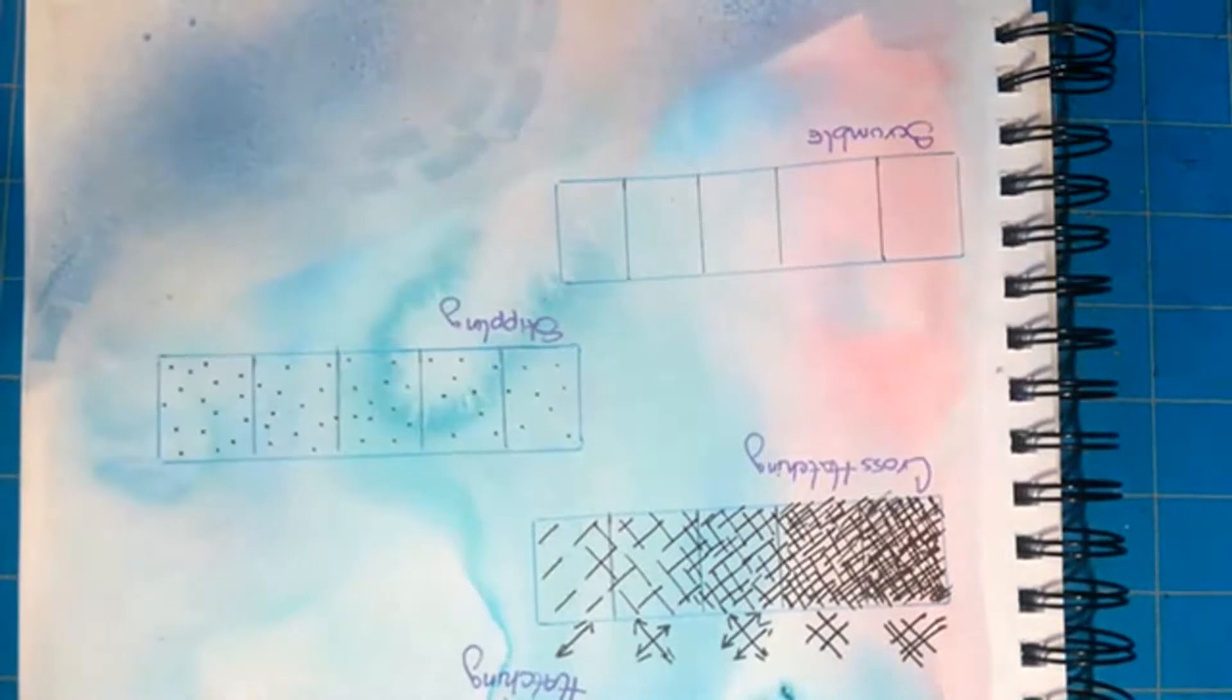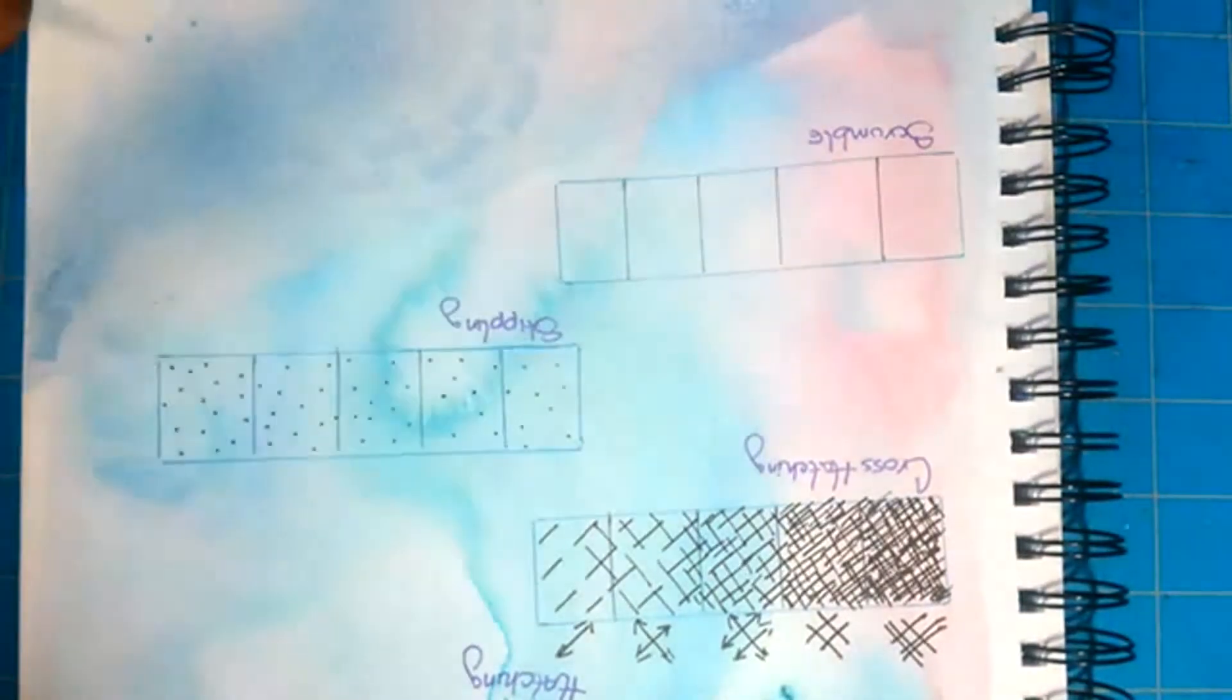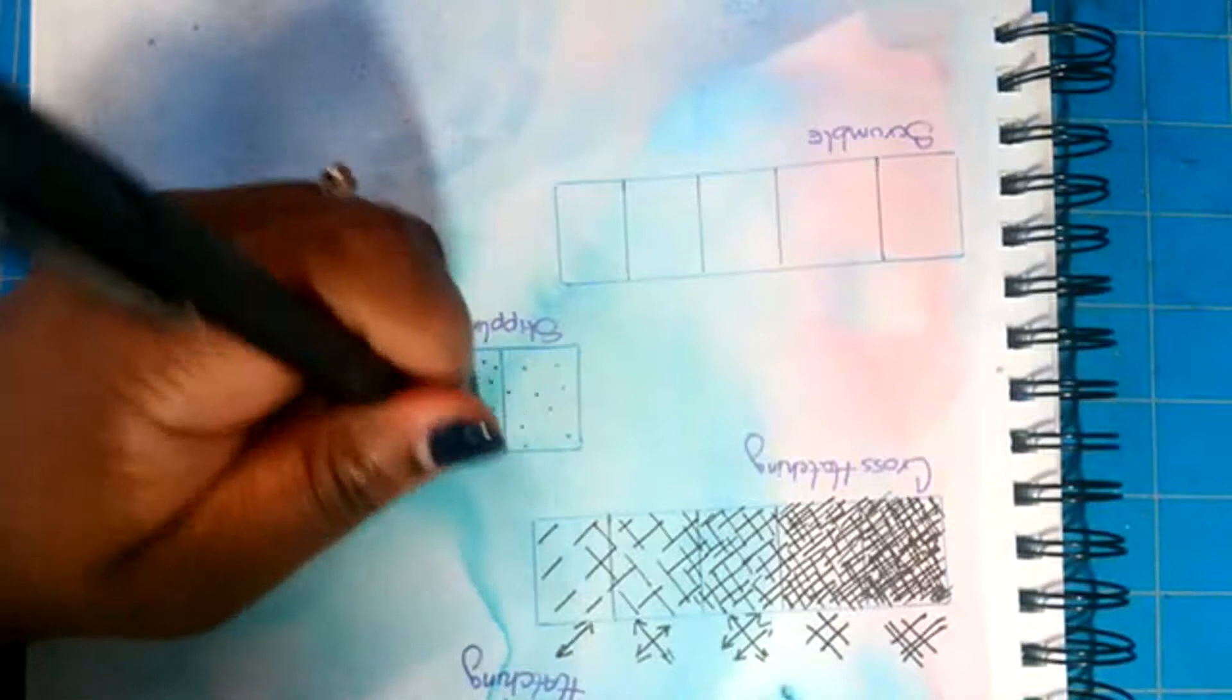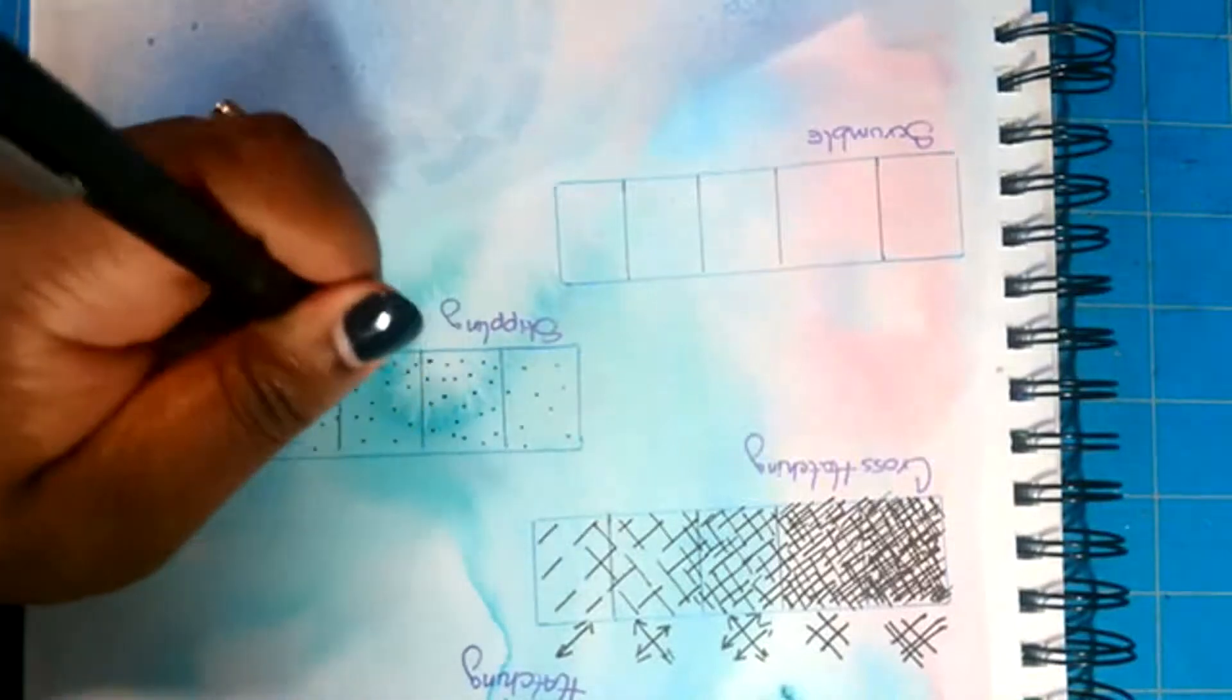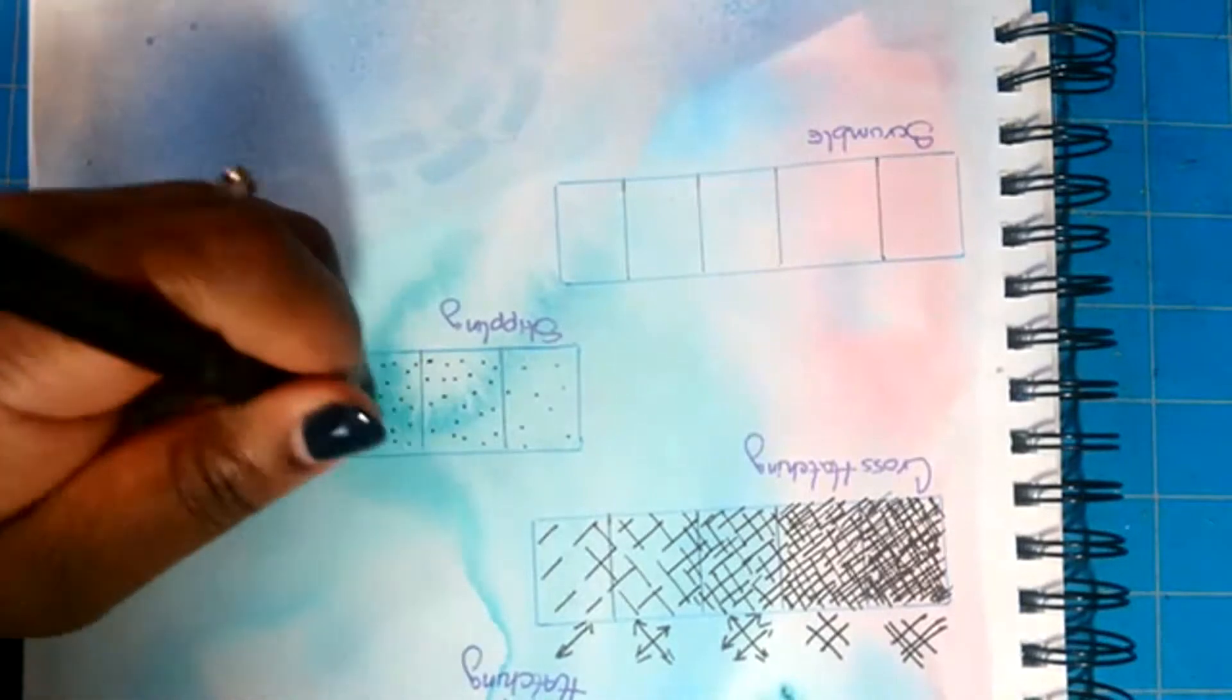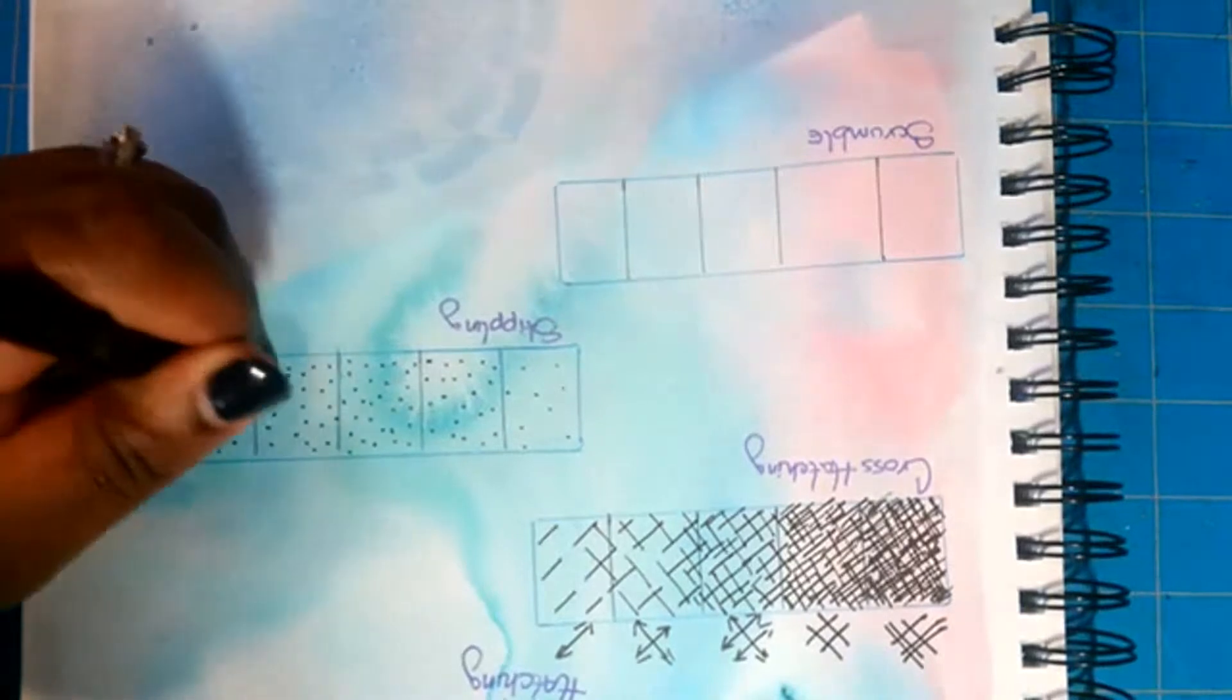If you were using a pencil for the other two first, you definitely want to probably start with your ink pen on this one. Now that I have my first value all the way across, I'm going in with the second and adding another layer of dots and I bet that you get the idea of what's about to happen.